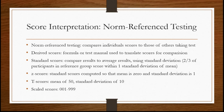I want to briefly go over score interpretation. There are two different types. One is norm-referenced testing, where we compare individual scores to the scores of other people taking the test. There are a lot of different ways to do that. We can use derived scores, where we have a formula or test manual to translate scores for comparison across test subjects. We can also use standard scores, comparing one person's score to the average results. A lot of times we use standard deviation to evaluate how a person's score compares to the mean — for example, two-thirds of the participants in any test are going to score within one standard deviation of the mean.